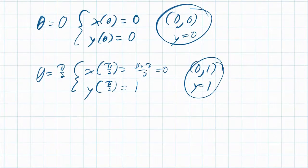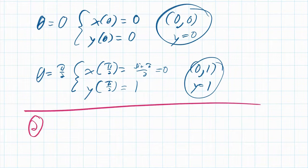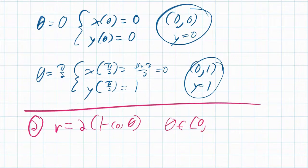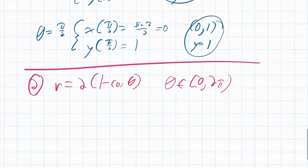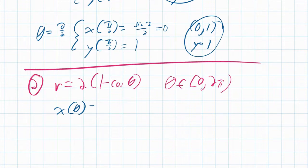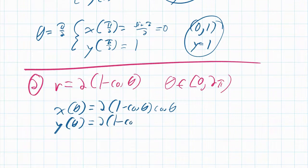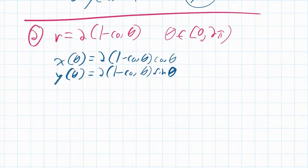For the second example: r = 2(1 − cos θ) for θ between 0 and 2π. We want to find vertical and horizontal tangents and points of tangency. So x(θ) = 2(1 − cos θ)·cos θ and y(θ) = 2(1 − cos θ)·sin θ.